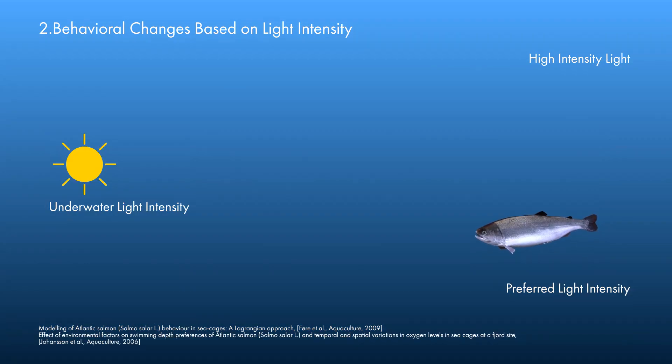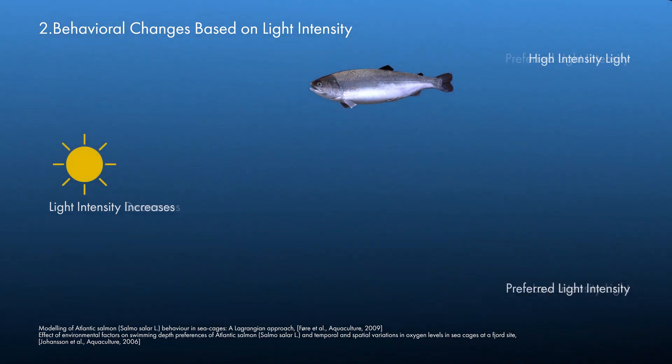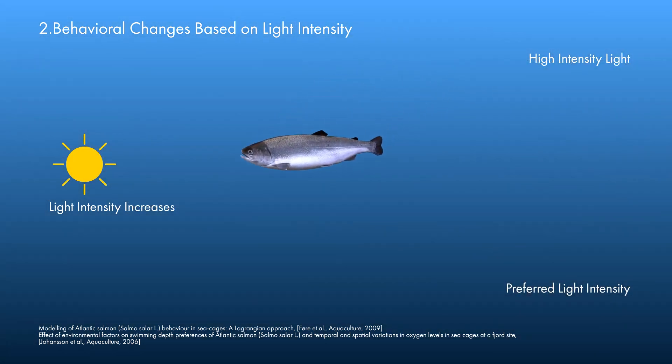Just like temperature, there are individual and age differences in fish light intensity preferences. As the light intensity changes, fish swim up and down in pursuit of their preferred light intensity.